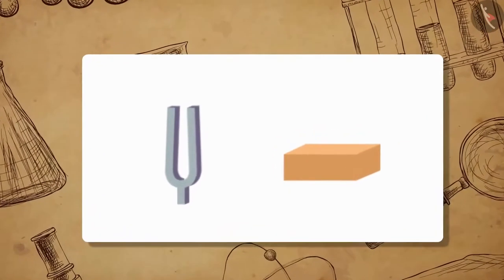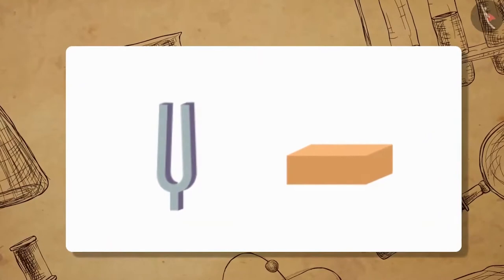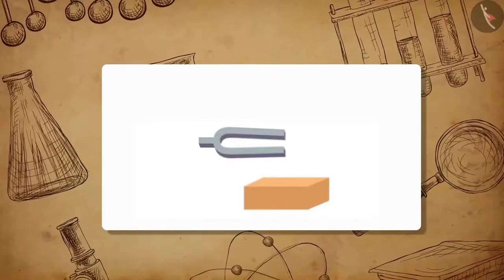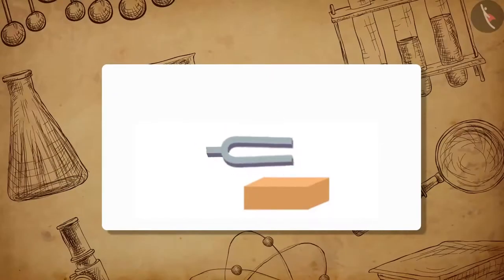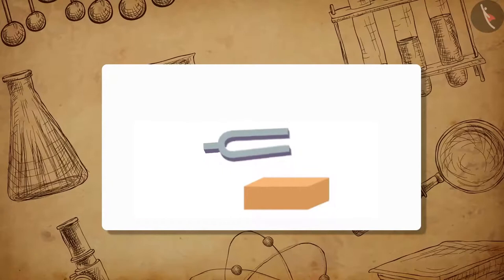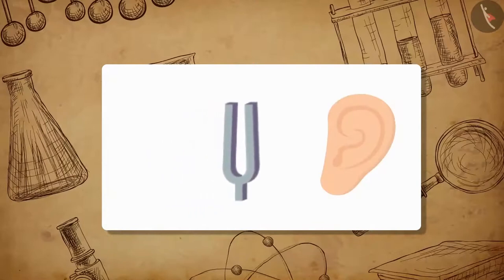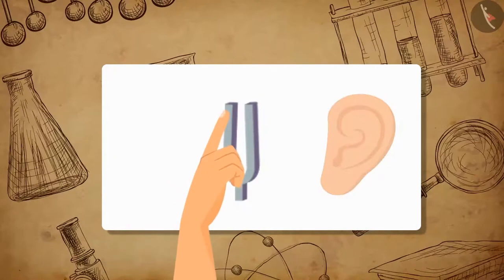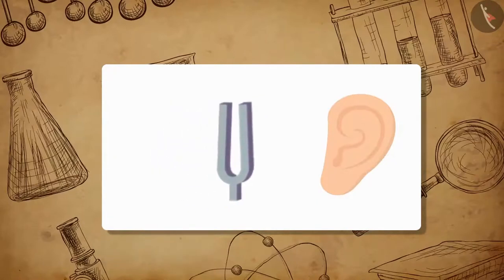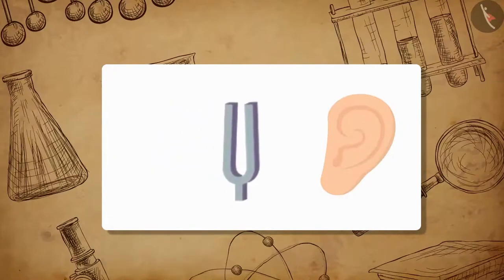Take a tuning fork and a rubber pad. Hit one of the prongs of the tuning fork on the rubber pad to set the fork into vibration. Now bring the tuning fork close to your ear, and then touch one of the prongs of the tuning fork with your fingers. What did you hear, and how did you feel about touching the prongs?